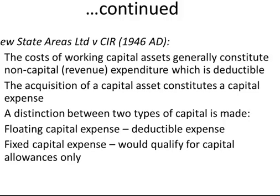In New State Areas Limited versus CIR, they found that the costs of working capital assets generally constitute non-capital or revenue expenditure which is normally deductible. The acquisition of a capital asset constitutes a capital expense. They made a distinction between the two types of capital: floating capital expense is your deductible expense, while fixed capital expense would only qualify for capital allowances, which we will come to later.